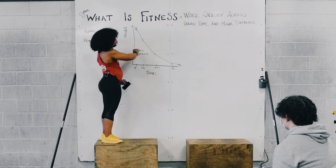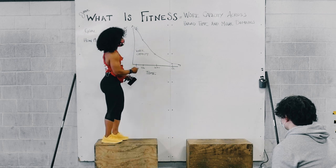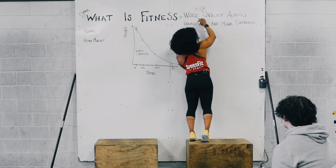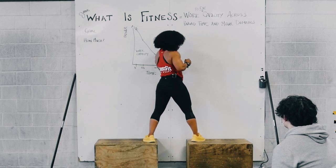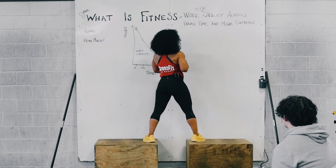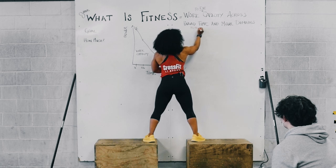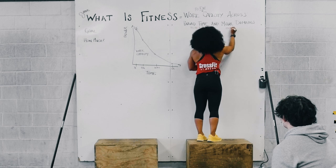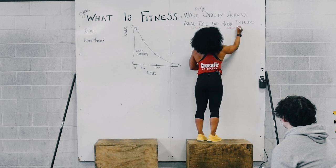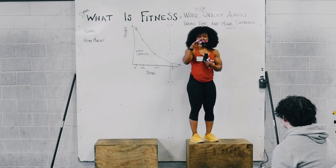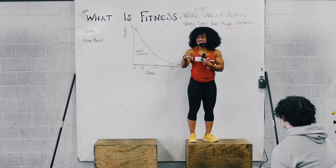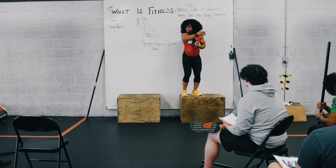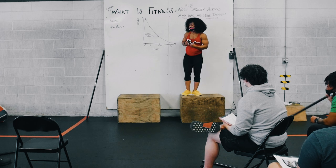So if this represents your work capacity — what you can do — how do those models tie in? Our work capacity is our power equation, force times distance over time, that Chuck talked about. That's what we're measuring. Our time domain comes from model two — remember, that was the metabolic pathways. And then our modal domains come from model one and three: the adaptations, the 10 general physical skills — power, speed, cardiorespiratory endurance, stamina, balance across all those things.